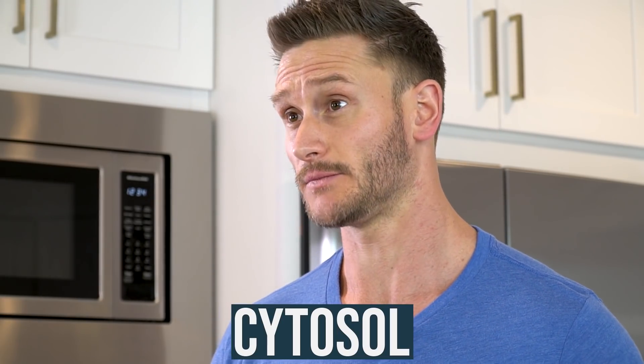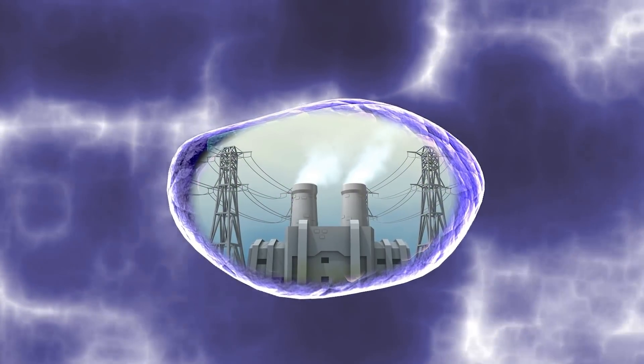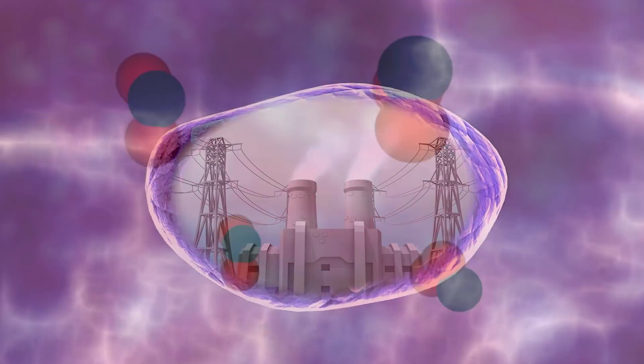If you were to consume a carbohydrate right now, that carbohydrate would go through digestion, break down, and you would have glucose. That glucose enters a cell and enters a specific area called the cytosol. What happens is that glucose gets broken down more and more into something called pyruvate — you probably remember that from sophomore biology class. Pyruvate then goes into the energy powerhouse, the mitochondria, and ultimately creates energy. But let's talk about how the electricity part actually works and where NAD comes into play.